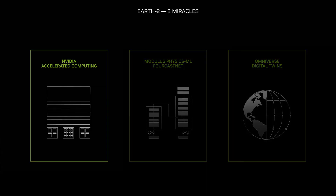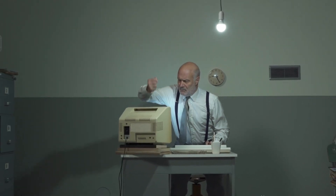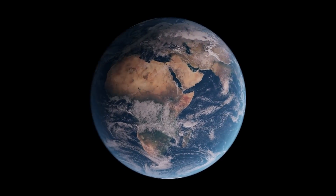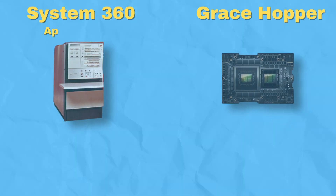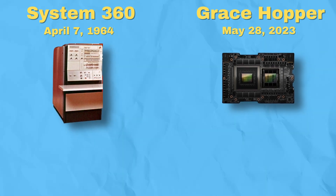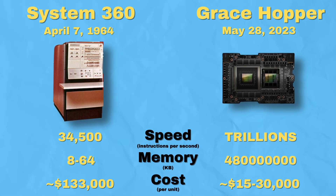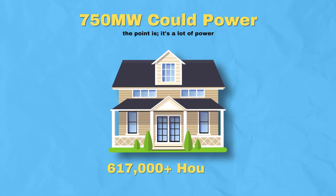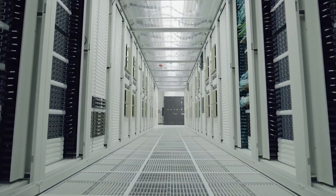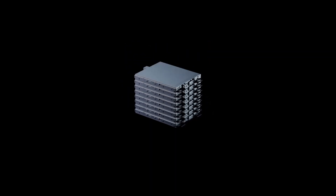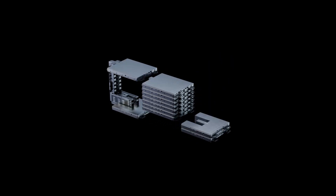Huang's first miracle: accelerated computing. Traditional computing is simply too slow and inefficient for the unthinkably large Earth 2 project. Before NVIDIA, computing had been done largely the same way since IBM's original System 360, 60 years ago. Traditional computing says to increase computational speeds, scale up the number of CPUs or cores in your system. Although this has been effective over time, it has simply become too costly and too slow. With this computing model, it would take 750 megawatts — or the power of every single data center on the planet joining forces — to even have a chance at running Earth 2. However, NVIDIA's newest chip, the Grace Hopper, performs tasks much faster and with much more power efficiency.